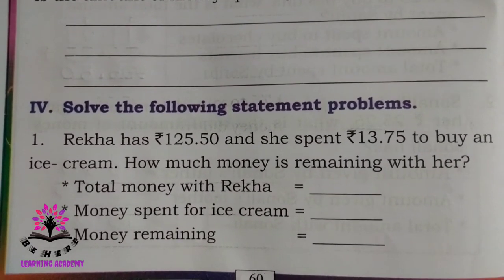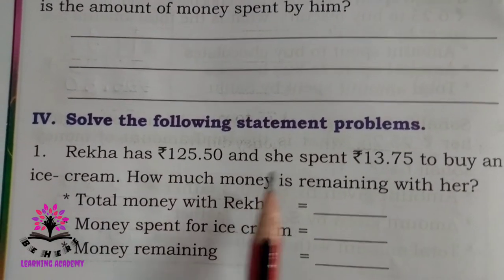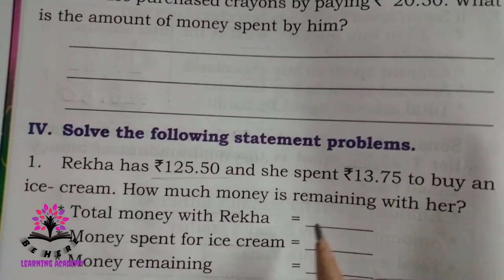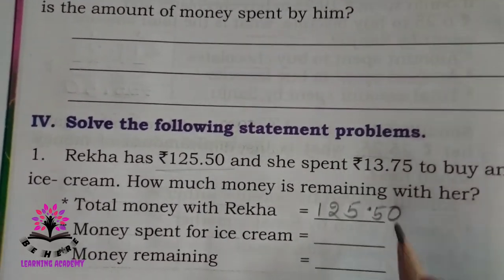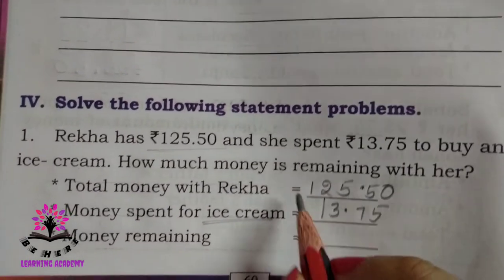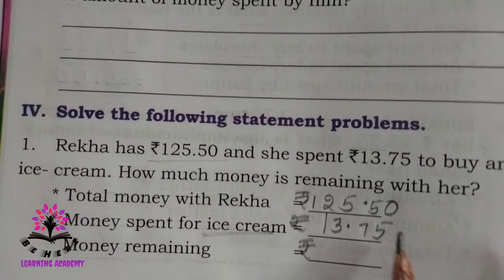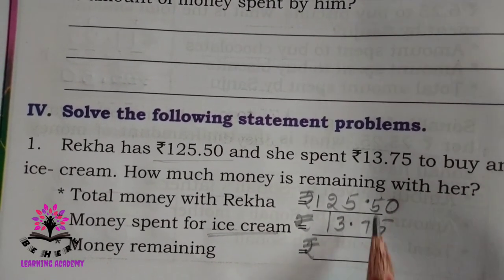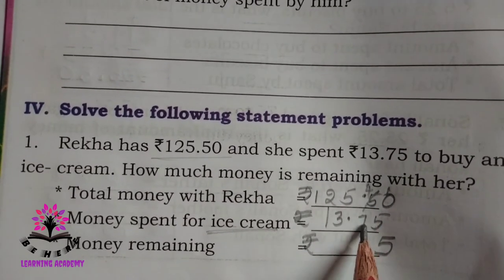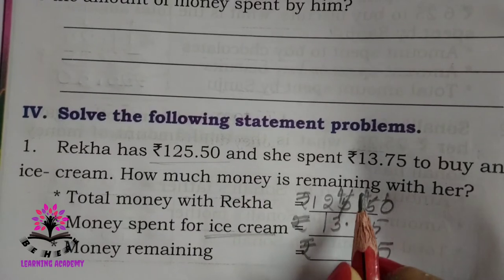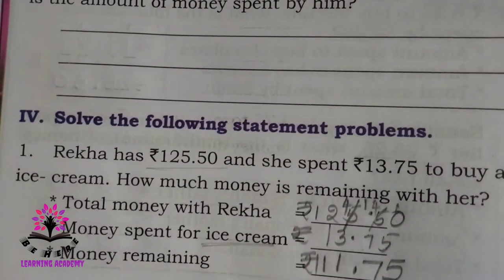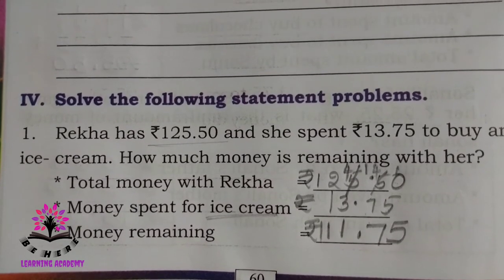Roman IV — Solve the following statement problems. Rekha has 125 rupees 50 paisa and spent 13 rupees 75 paisa to buy an ice cream. How much remains? You subtract: 125.50 − 13.75. Borrowing where needed, the answer is 111 rupees 75 paisa.